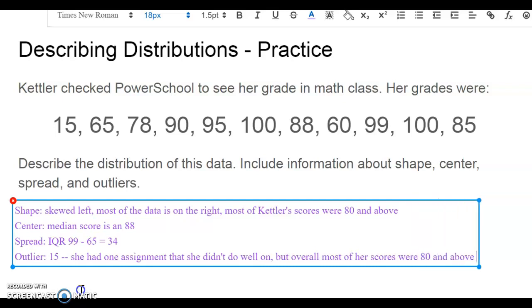So when we think about describing distributions, it's helpful for us to think about describing them in terms of a context. So when we think about the shape of the graph, again because it's skewed left, we know in context that means that most of her scores were higher on the higher end.